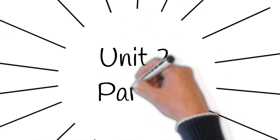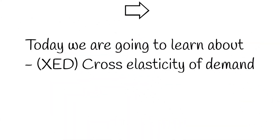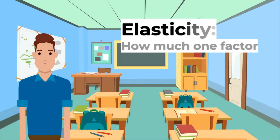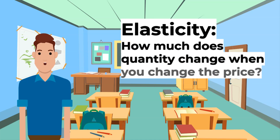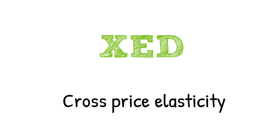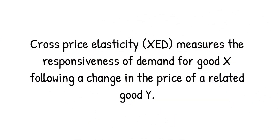Hi and welcome to our series on IGCSE Economics Unit 2 Part 5. In today's episode we will be learning about XED, cross elasticity of demand. If you haven't seen our previous videos, please click on the card above. Elasticities are how much one factor changes when you change another — for instance, how much does quantity change when you change the price.